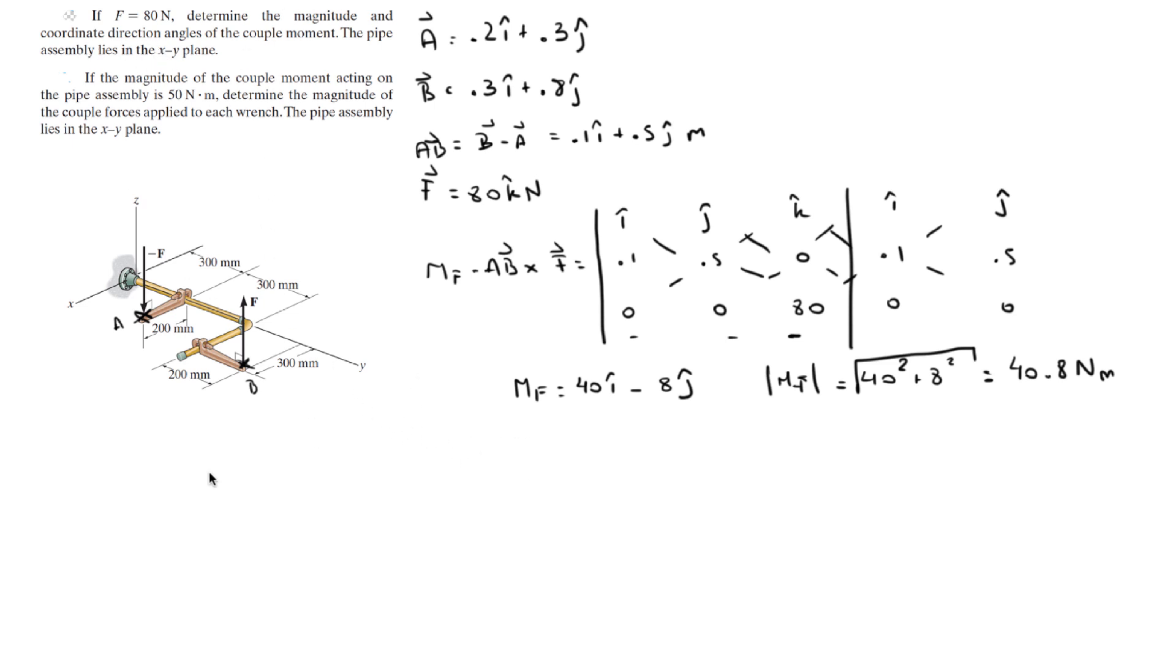Now, they want you to find the coordinate direction angles. Alpha is cosine inverse of the x component over the magnitude. Beta is cosine inverse of the y component over the magnitude, which is equal to 101.3 degrees.